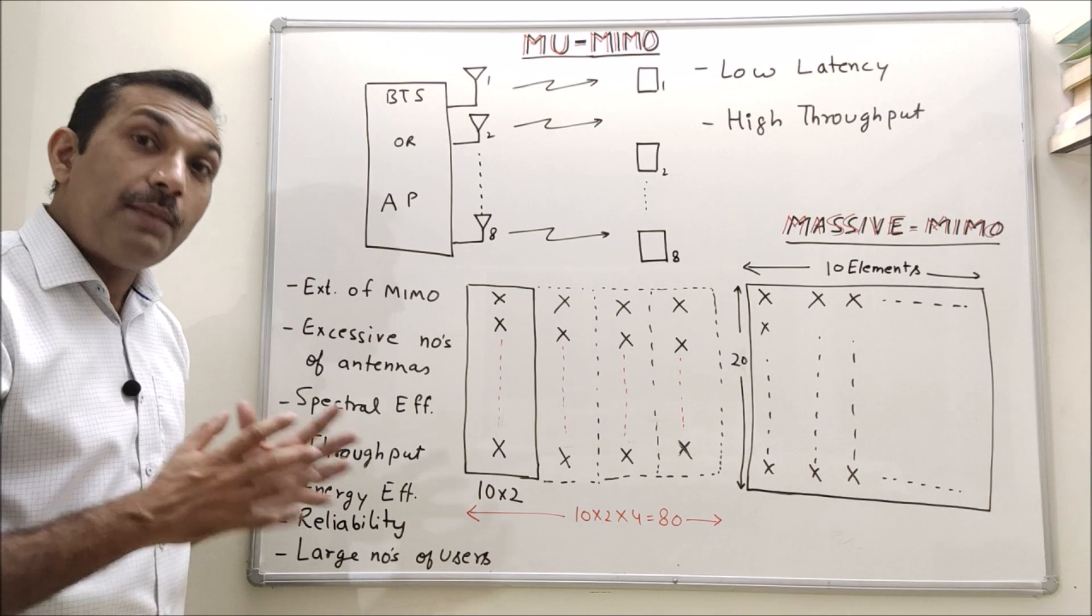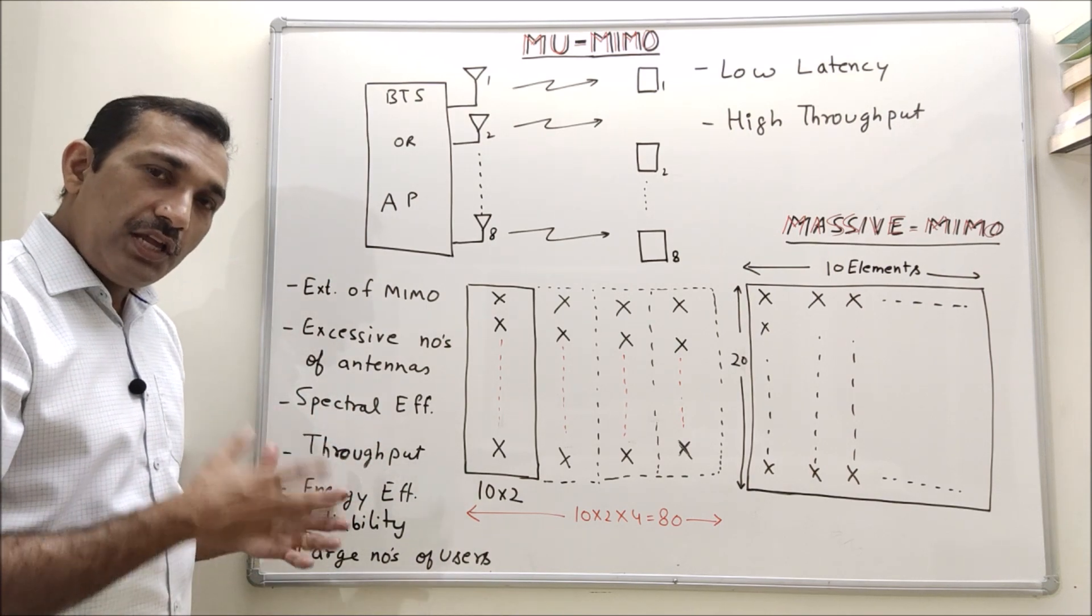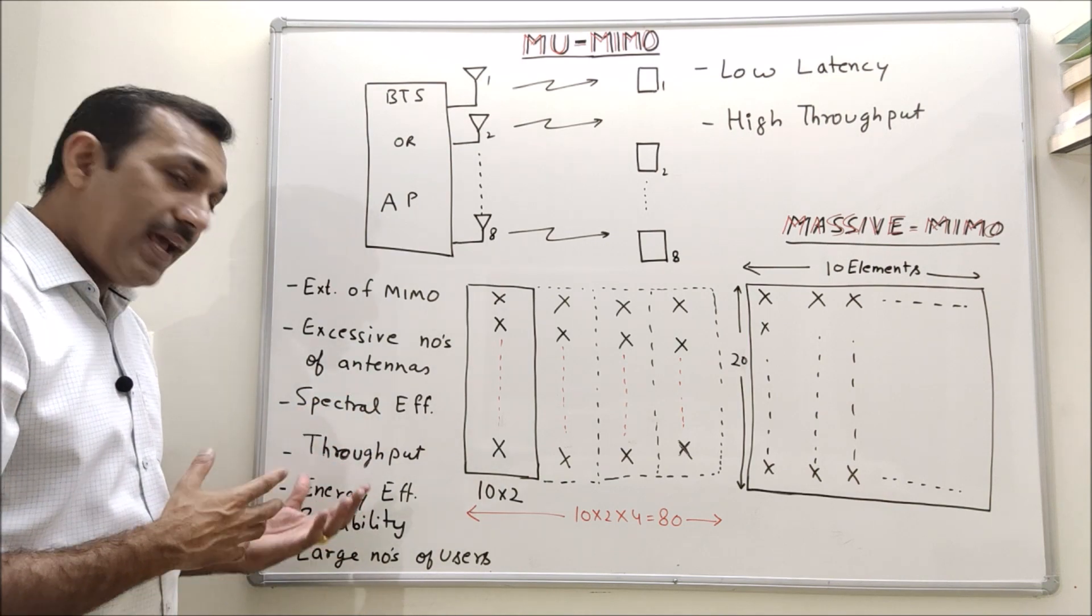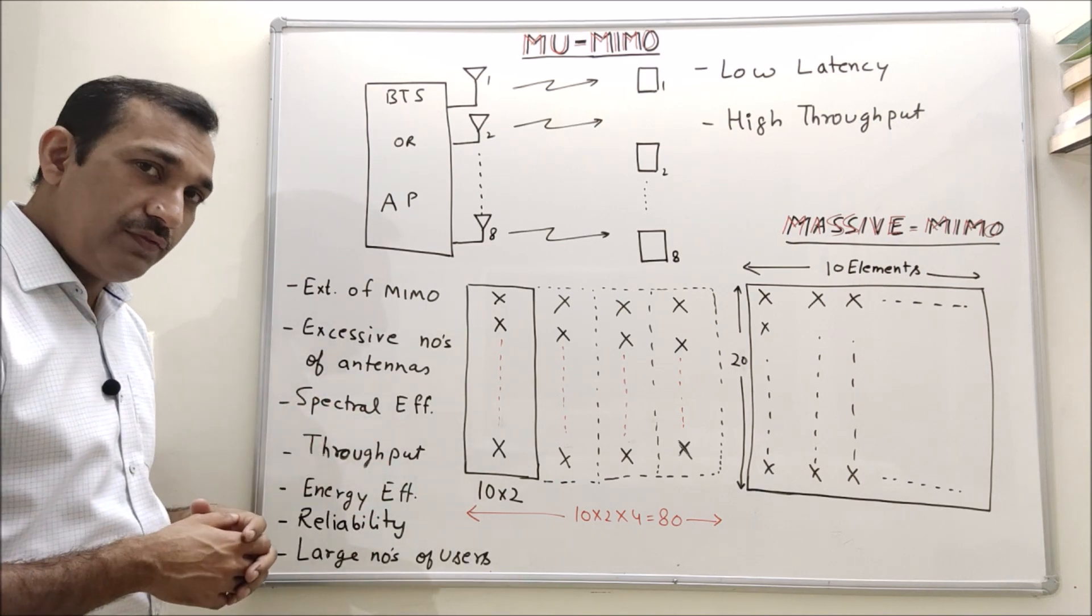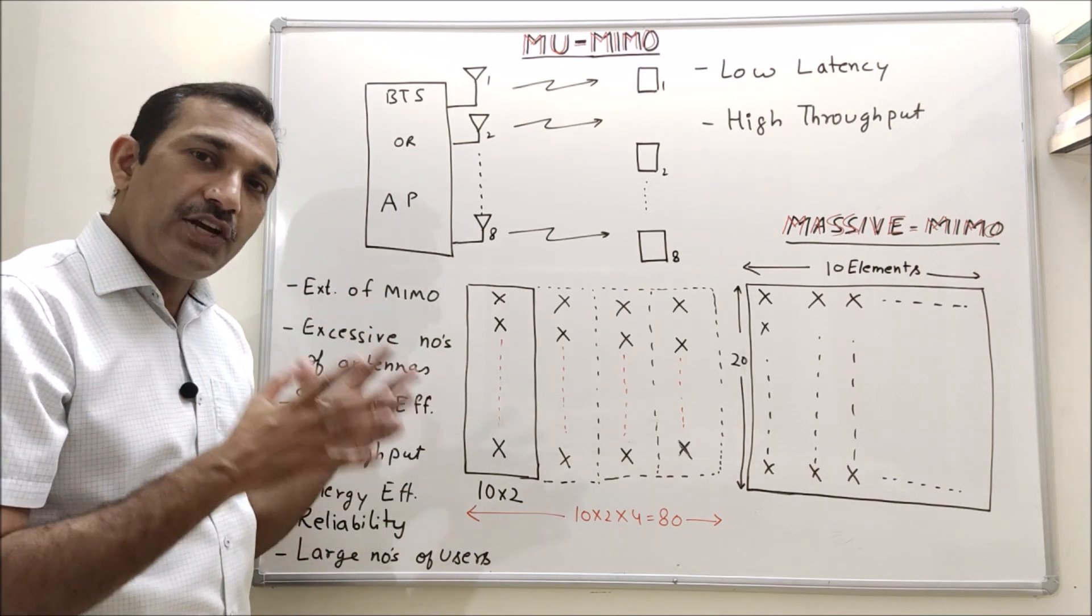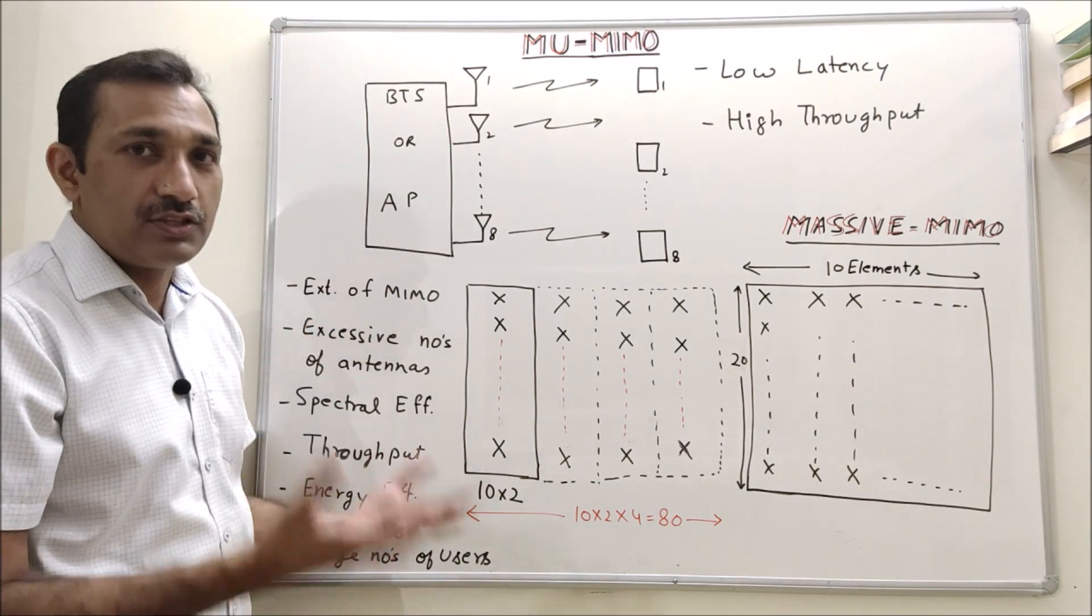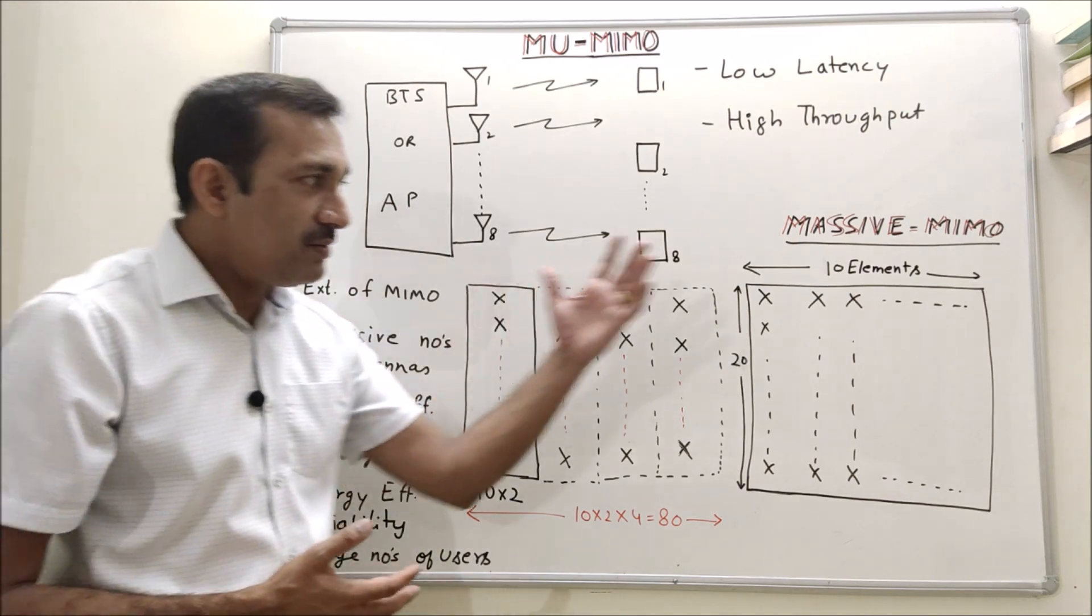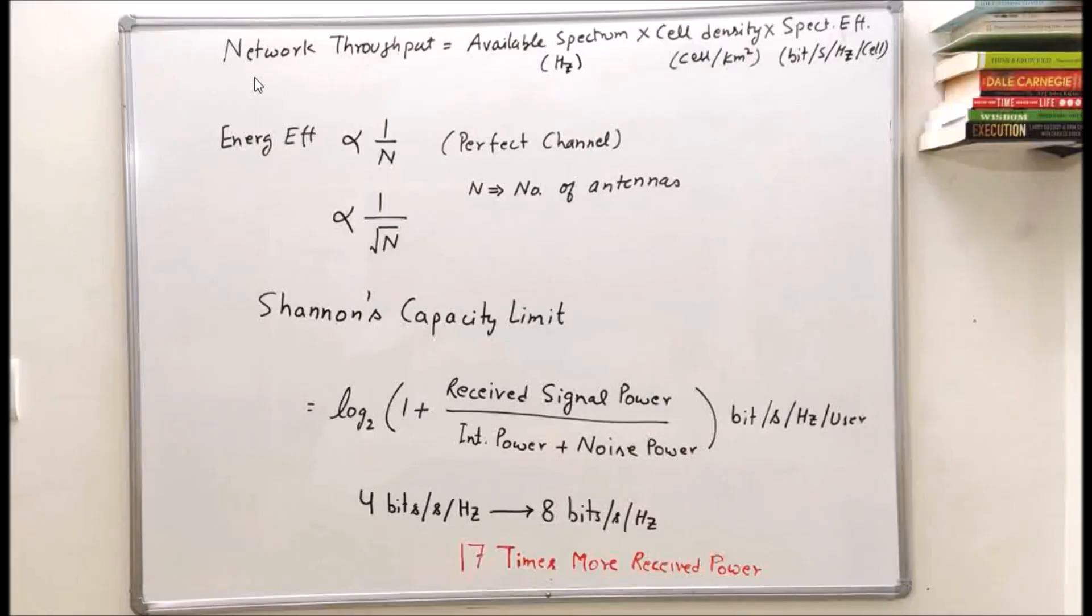We can create high gain beam towards different users and massive MIMO is extension of MIMO. It has excessive number of antennas - I am talking about hundreds of antennas. Spectral efficiency in massive MIMO is very high and similarly energy efficiency is also very high. Throughput is also very high because we have very high gain directional beam towards each user. Reliability is high because our gain is high, coverage is good, and because of large number of radiators we are serving large number of users.